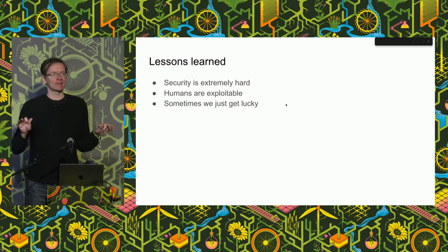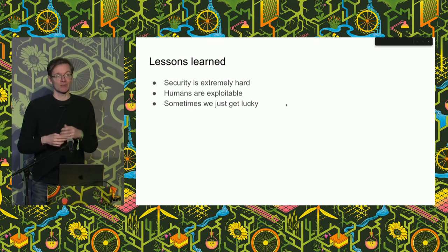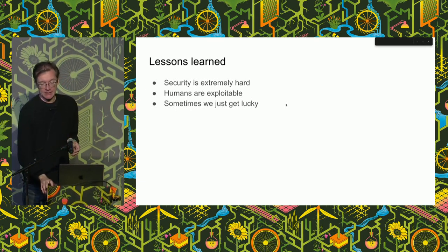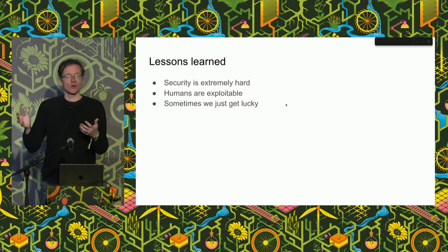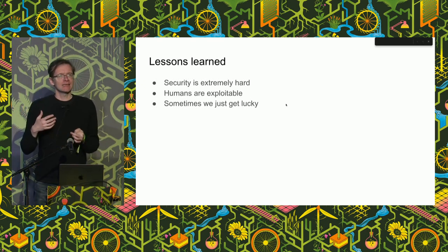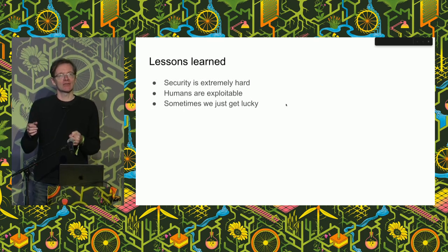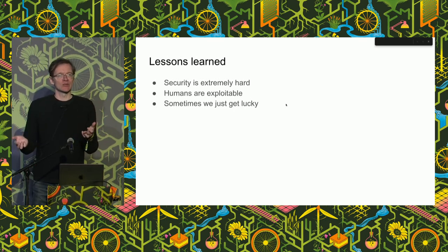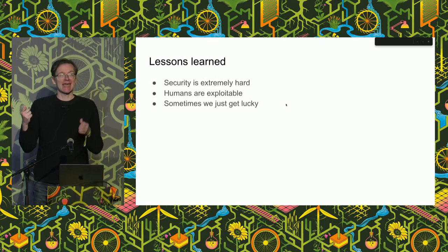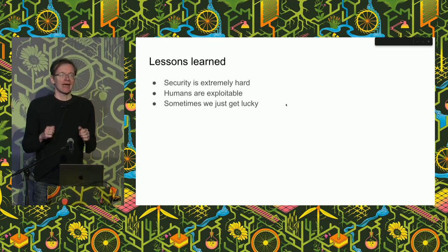Lessons learned from this: security is really hard, especially in the face of a sophisticated actor. The Jia Tan identity — the name is clearly supposed to evoke China or Taiwan — but the behavior and the timing of commits is much more consistent with working hours in Eastern Europe. Commits also continued happening over the Lunar New Year, which would not really be expected otherwise. Humans are exploitable: the fact that an open source maintainer of a critical project was burned out made it possible for malicious actors to get themselves into a position of trust. And sometimes we just get lucky — the reason we noticed this was not because any of our security infrastructure was so well designed that it picked up on it. It's that one person looked at something, thought 'huh, that's weird,' and kept on digging.